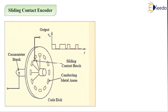In the sliding contact encoder, all the conducting areas are connected to the common slip ring on the encoder shaft by using the brush mechanism. You can see common slip rings are there. The conducting metal areas are connected to the common slip ring on the encoder shaft using the brush mechanism. A sliding contact such as a brush is the sliding contact we can refer to.